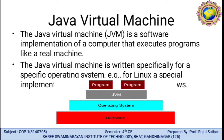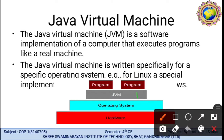Java Virtual Machine, JVM. JVM is a software implementation of a computer that executes programs like a real machine. The Java Virtual Machine is written specifically for a specific operating system. It works on specific operating systems like Linux and is implemented on various machines like Windows. The JVM requires an operating system platform and hardware to operate the particular program.